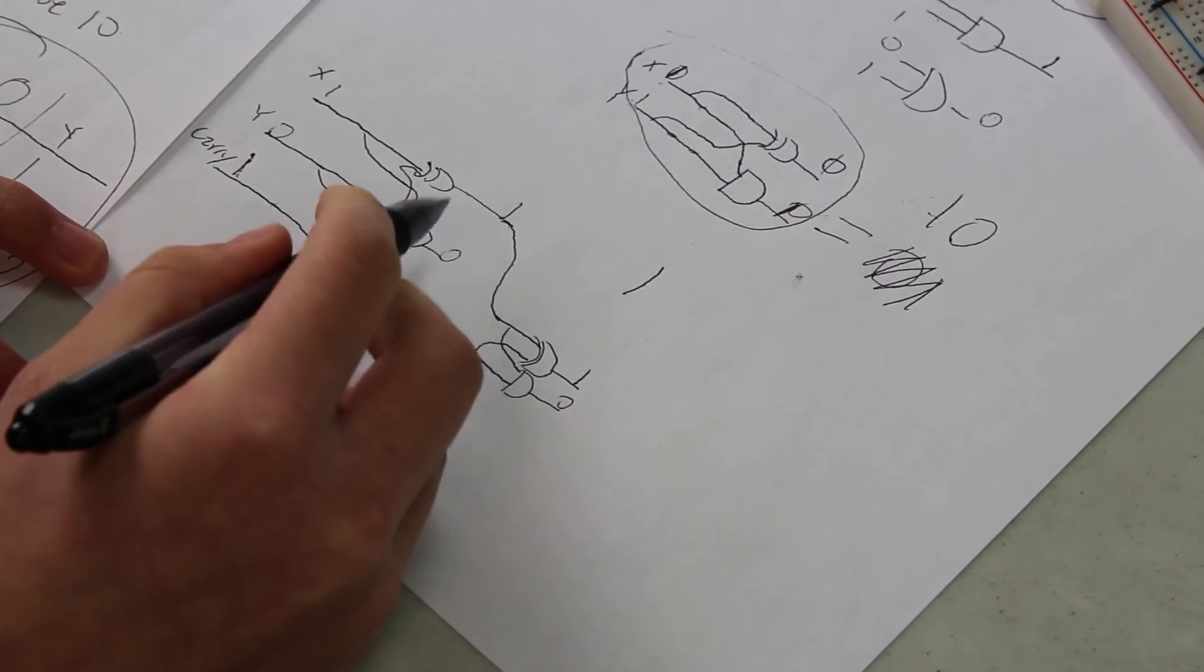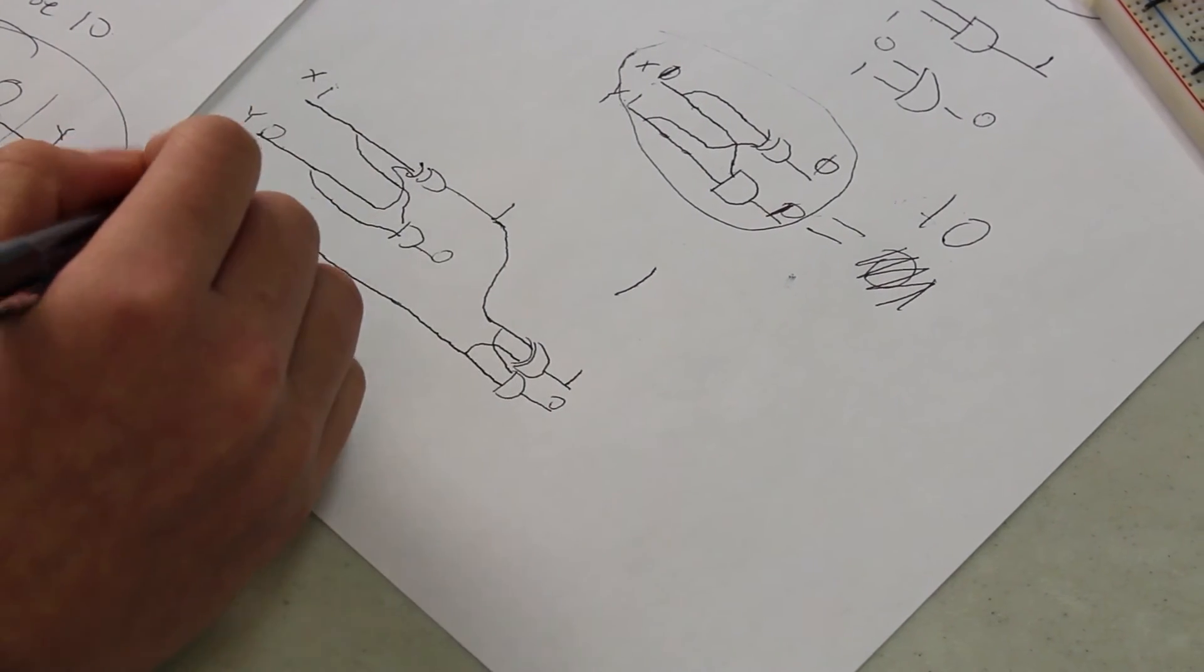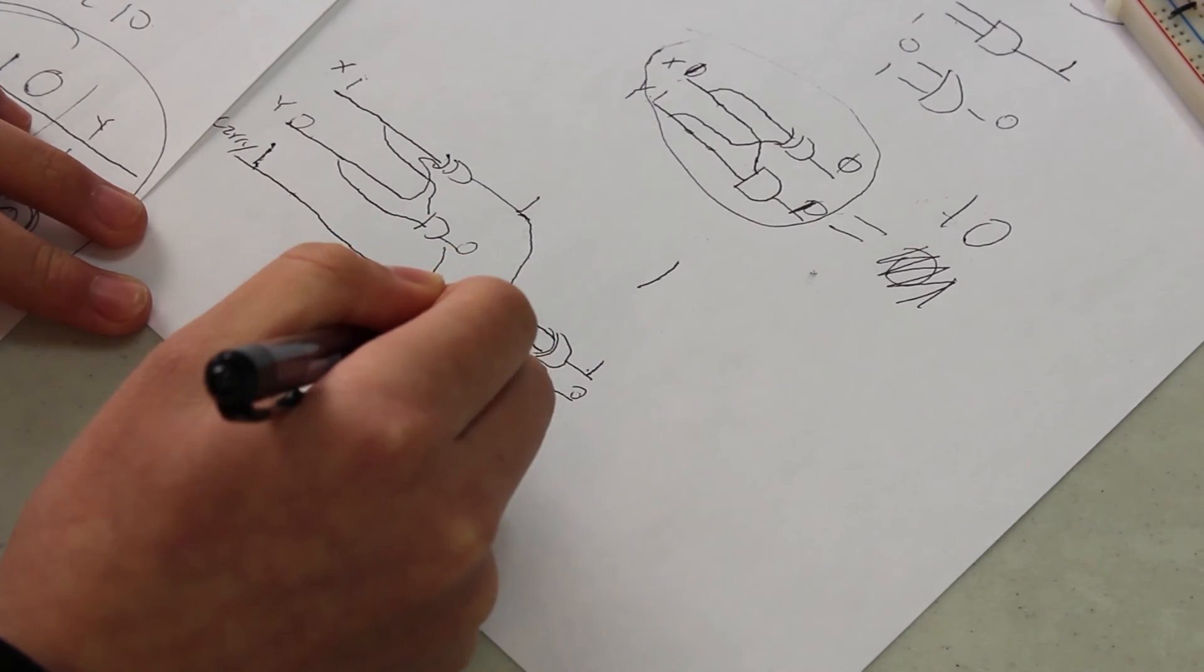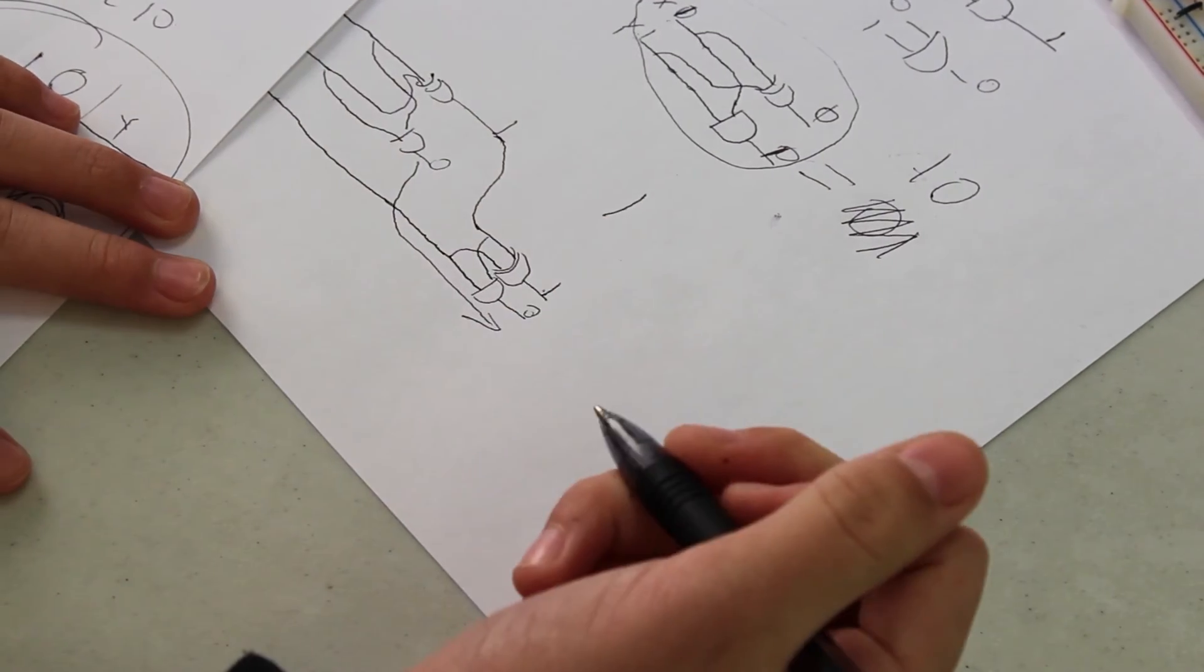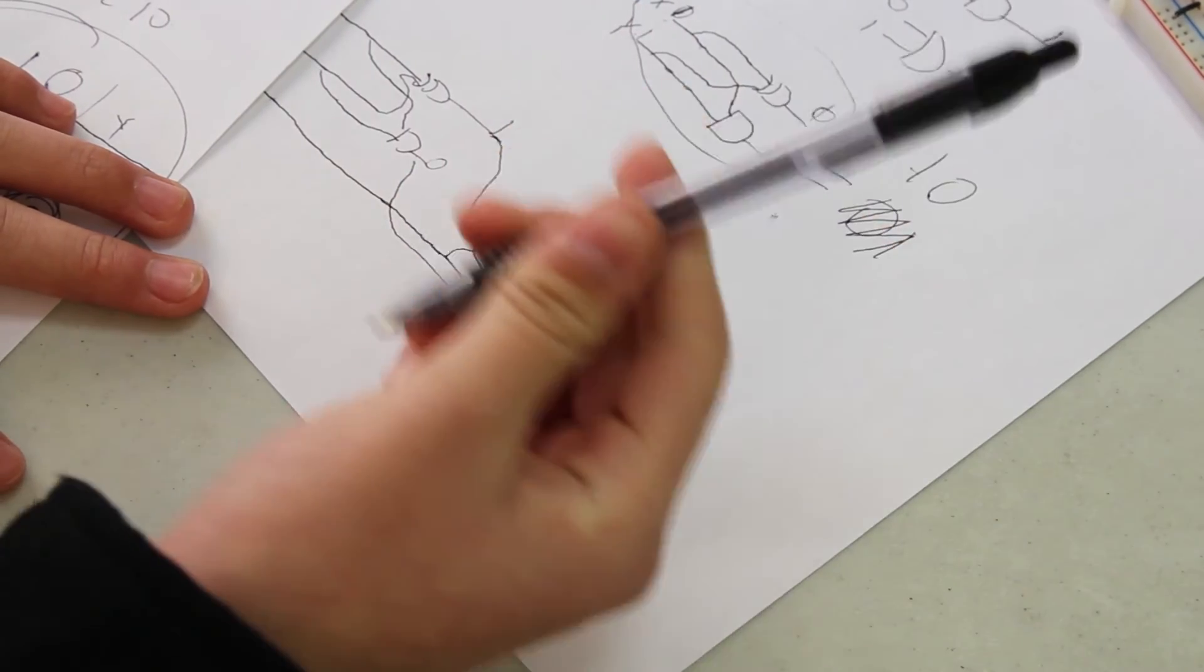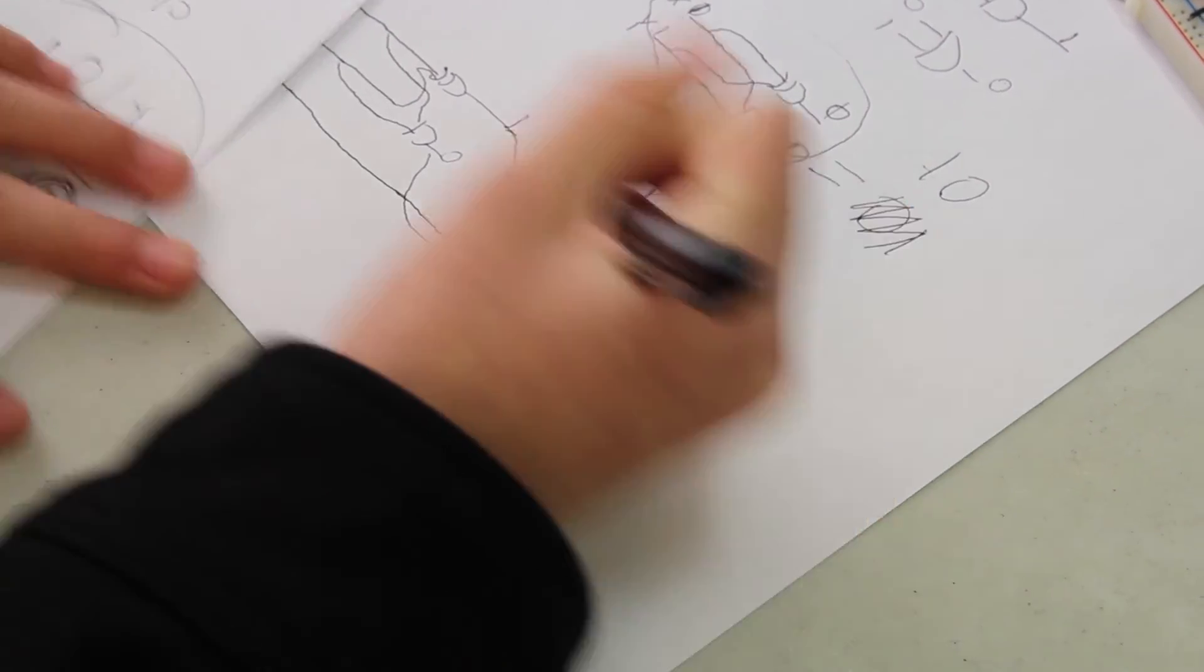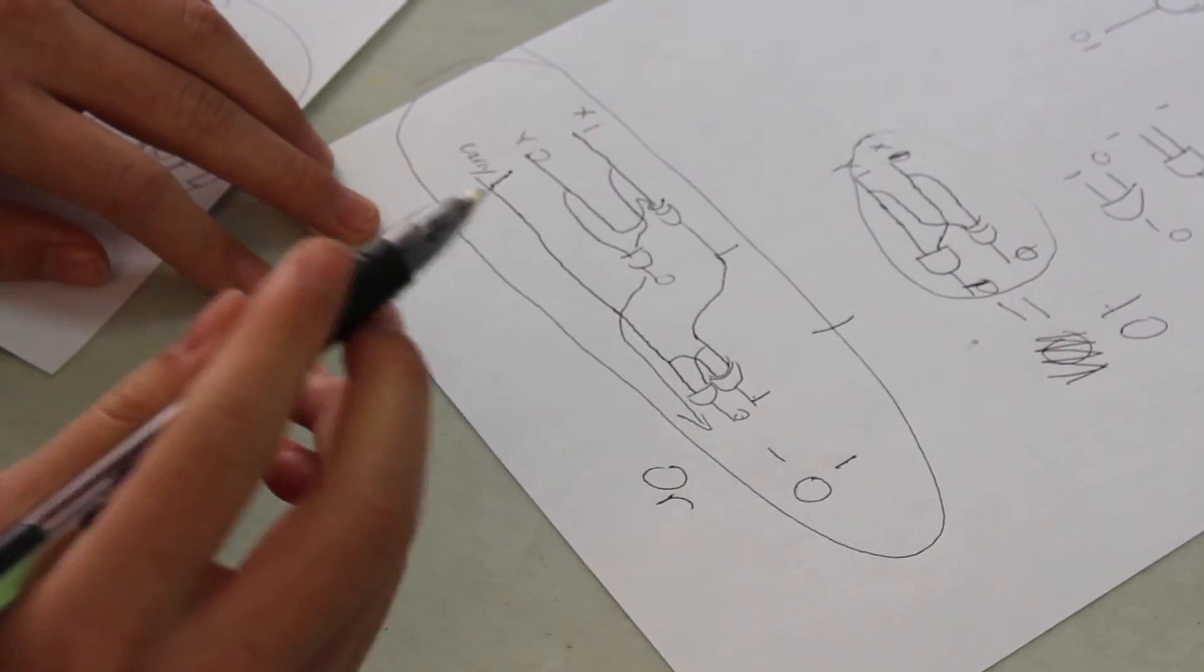So then what we have is the carry from this, it's 0. We have the sum, which is this plus this plus this, which is 1, 0. That would be 2 in base 10, which is 1 plus 1 is 2. So we take an OR gate. If any one of these two inputs is 1, we make that into a 1. None of these are 1, so it's a 0. 1, 0. That's 2. This entire thing is what we call a full adder.